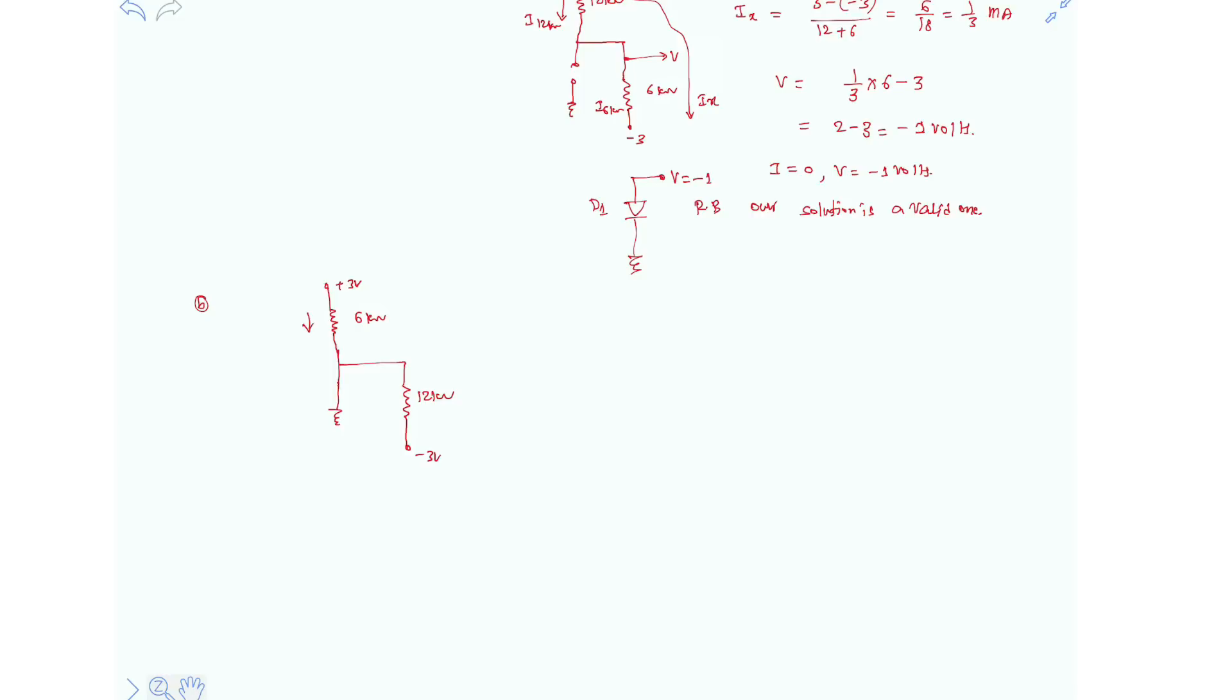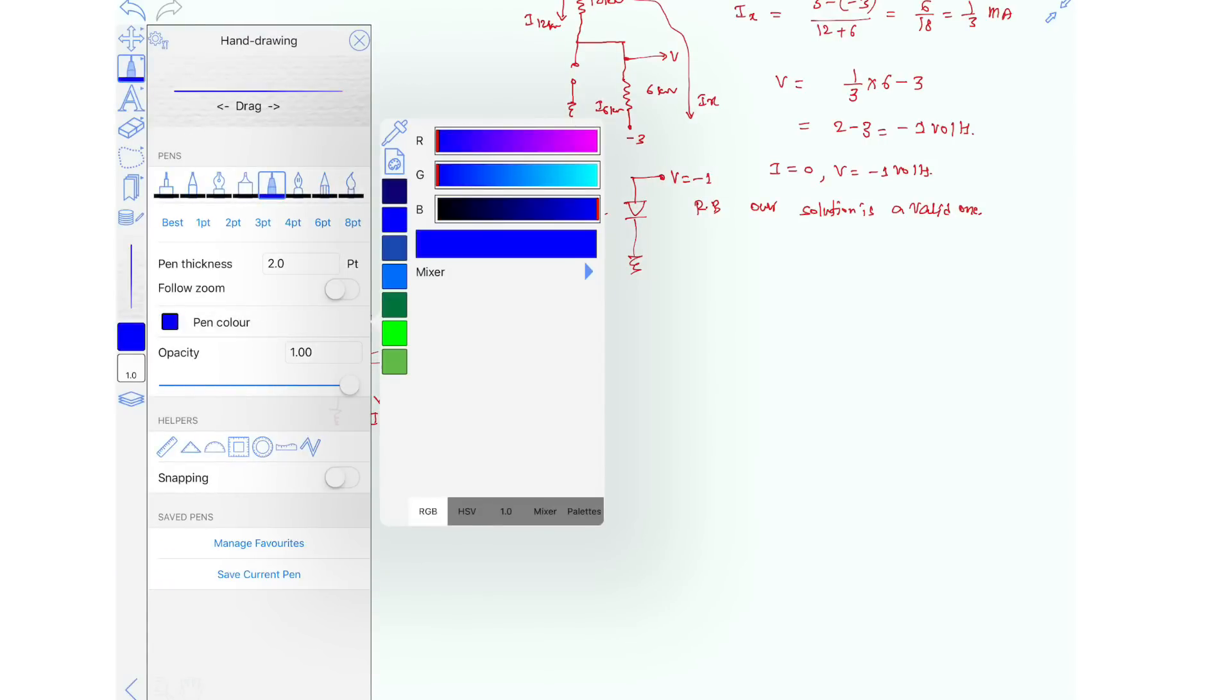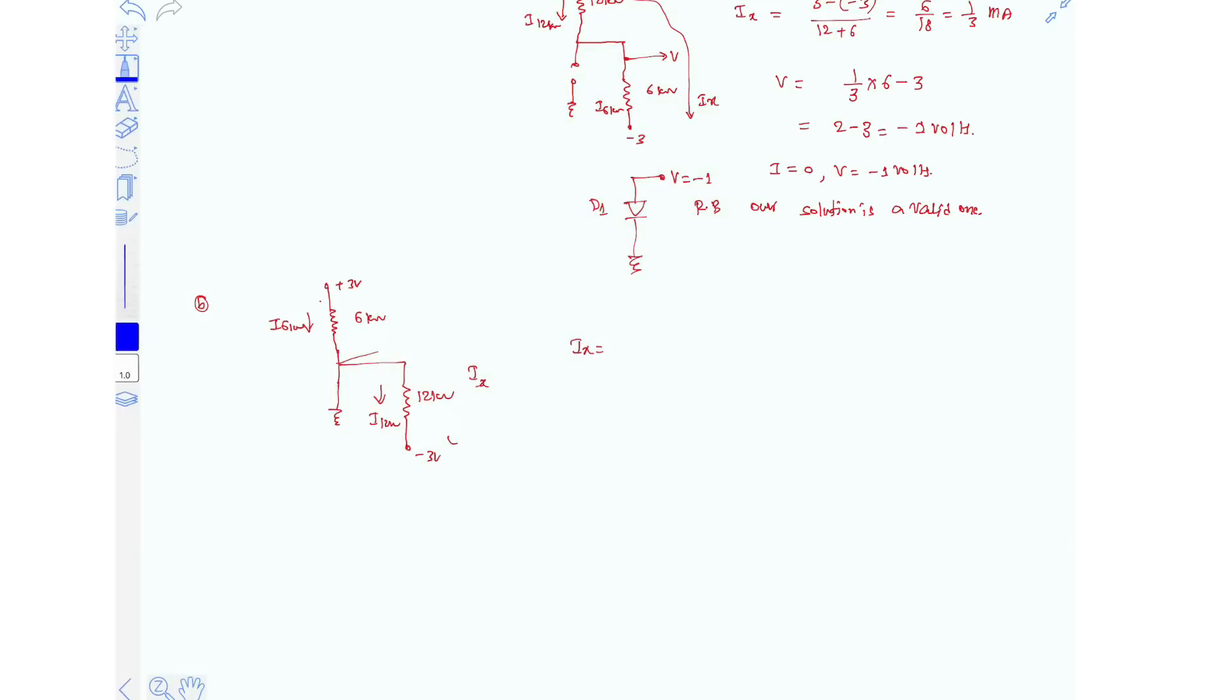So this is Ix. Ix is... no, oops. This is I6kΩ resistor. This is I12kΩ resistor. This is I12kΩ resistor. Let's choose one more pen color here. So this is our required value I. So this is the voltage V, clearly 0 because it is directly connected to the ground.